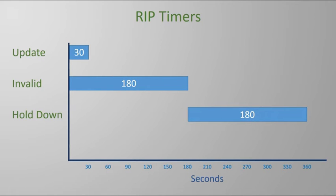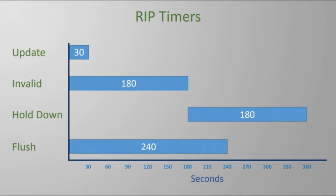When a route enters the hold down state, the hold down timer starts. During this time no updates for this route will be accepted. This stabilizes the routing table while converging, giving the router enough time to find another valid path. The flush timer begins at the same time as the invalid timer but counts up higher — by default 60 seconds longer than the invalid timer. During this 60-second overlap the router advertises the route as invalid using metric 16. When the flush timer expires, the invalid route is removed from the routing table. These timers in their default values are very high, so it can take several minutes for a network to fully converge — one way RIP is significantly inferior to other routing protocols.